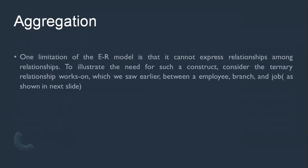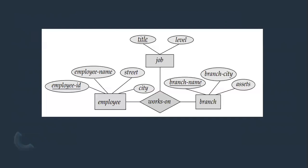Next is aggregation. One limitation of the ER model is it cannot express relationships among relationships. To understand aggregation, let us look at the diagrams. This is a ternary relationship — an employee works on a branch, and an employee can be given a title and level. So an employee works on a job with a specific title and level, and works on a branch.